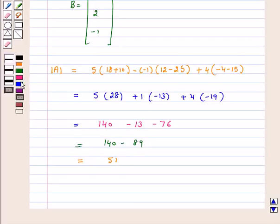This implies determinant of A is not equal to 0. Because determinant of A comes out to be 51 which is not equal to 0, so A is a non-singular matrix.